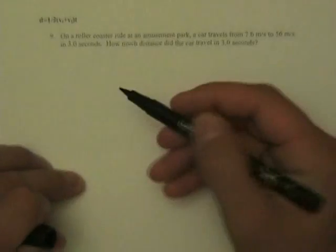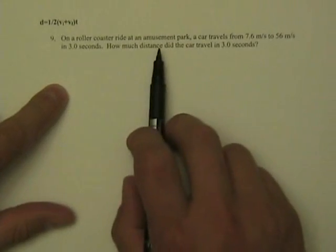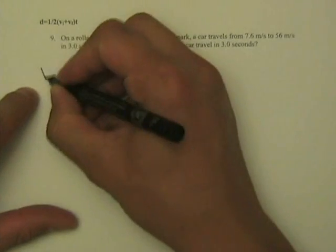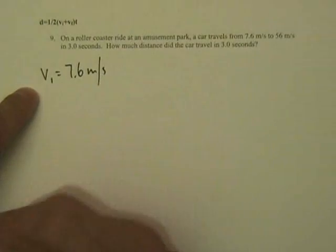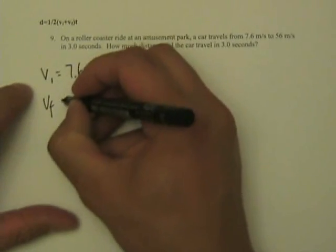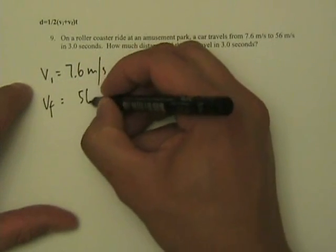This is another kinematics equation. This one has a roller coaster ride where you travel from an initial velocity of 7.6 meters per second to a final velocity of 56 meters per second.